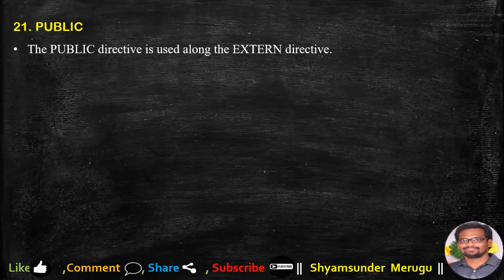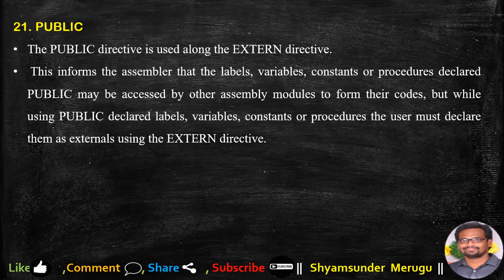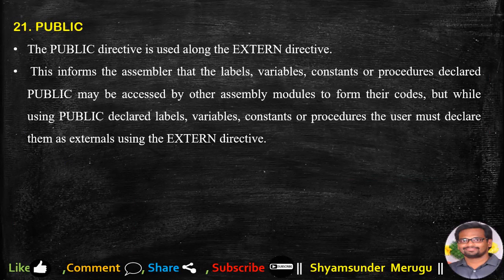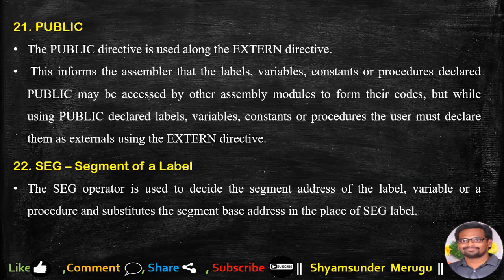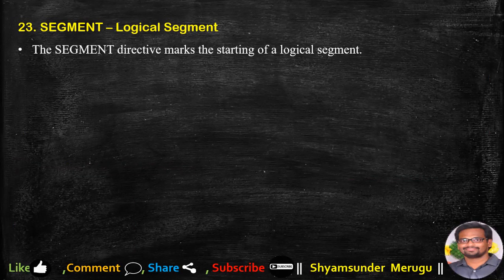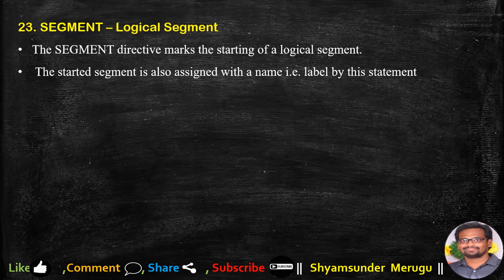The PUBLIC directive is used along with the EXTERN directive. It informs the assembler that labels, variables, constants, or procedures declared public may be accessed by other assembly modules. Users must declare them as externals using the EXTERN directive. SEG stands for segment of a label. The SEG operator determines the segment address of a label, variable, or procedure and substitutes the segment base address in place of 'SEG label'. The SEGMENT directive marks the starting of a logical segment, which is also assigned a name by the statement.